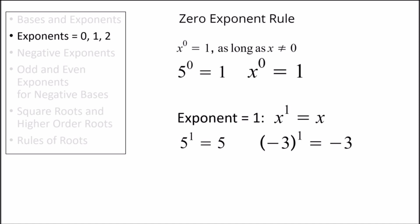Next we have the exponent 1. Exponential terms with an exponent of 1 are equal to the base. For example, 5 raised to the power of 1 is equal to 5, or 0 raised to the power of 1 is equal to 0. This even holds for negative numbers, so negative 3 raised to the power of 1 is equal to negative 3. Finally we have the exponent 2. Exponential terms with an exponent of 2 are often referred to as squaring a number, or a number squared. For example, 3 to the power of 2 can also be read as 3 squared. This is important because some math questions will test if we know that the square of a number is equivalent to raising that number to the power of 2.